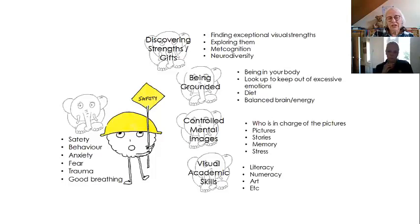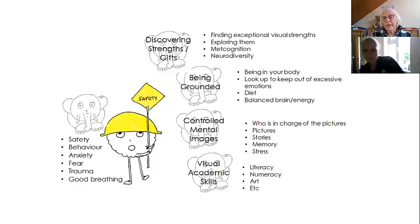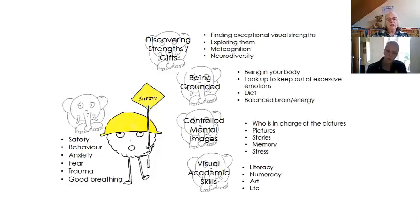ADHD people just need a bit more control over their mental images. The autistic group are normally not grounded, not breathing well, and have no control over their mental images because they're coming in like an avalanche. You might even see them shy away from them.